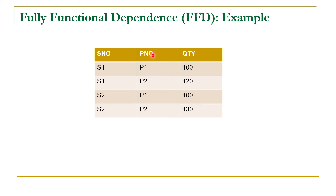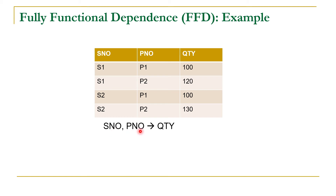Now we have to decide about the fully functional dependence. We know that the primary key will functionally determine all other non-key attributes. So the primary key — combination of S number and P number — and non-key attribute is quantity. So S number and P number will functionally determine quantity, because this combination is unique. For each combination of S number and P number we have only one value of quantity, so quantity is functionally dependent on the S number and P number combination.